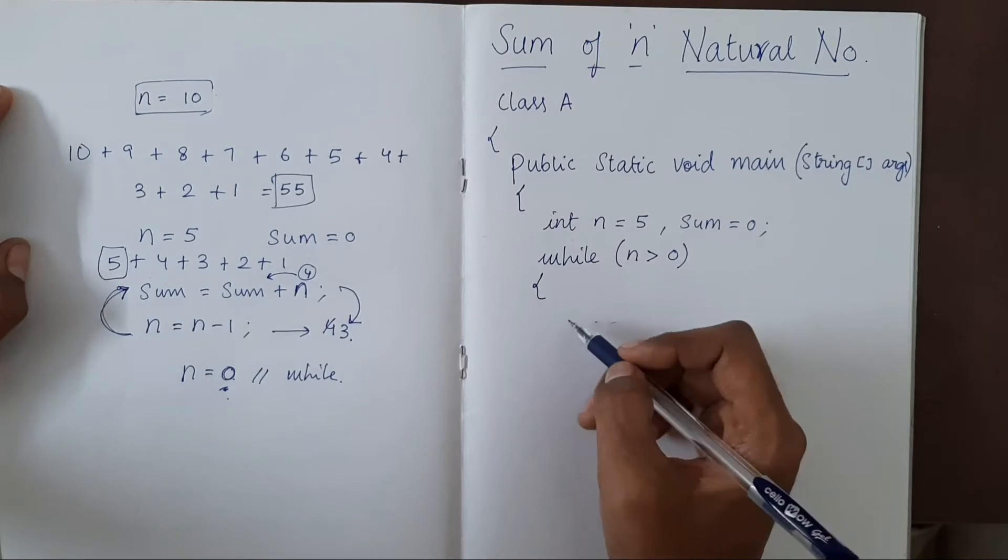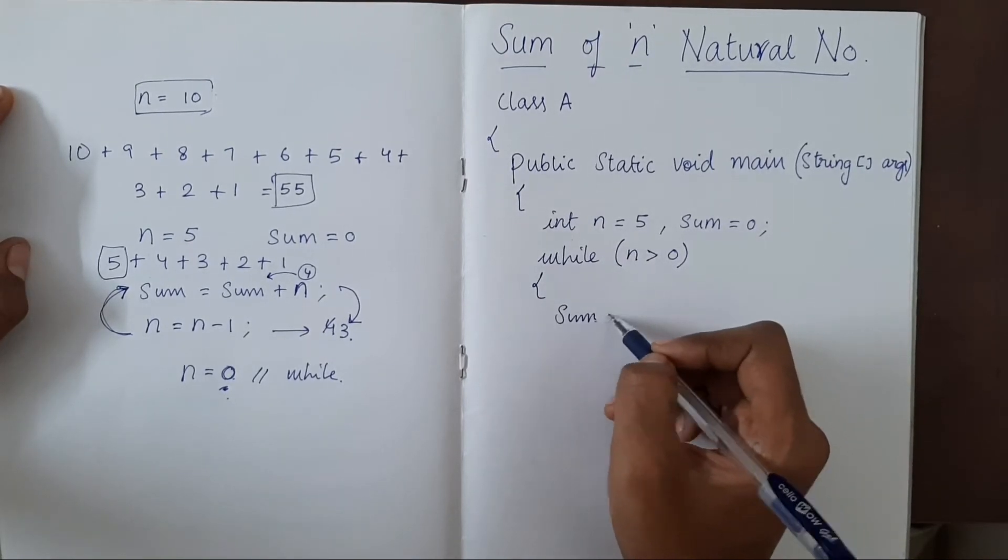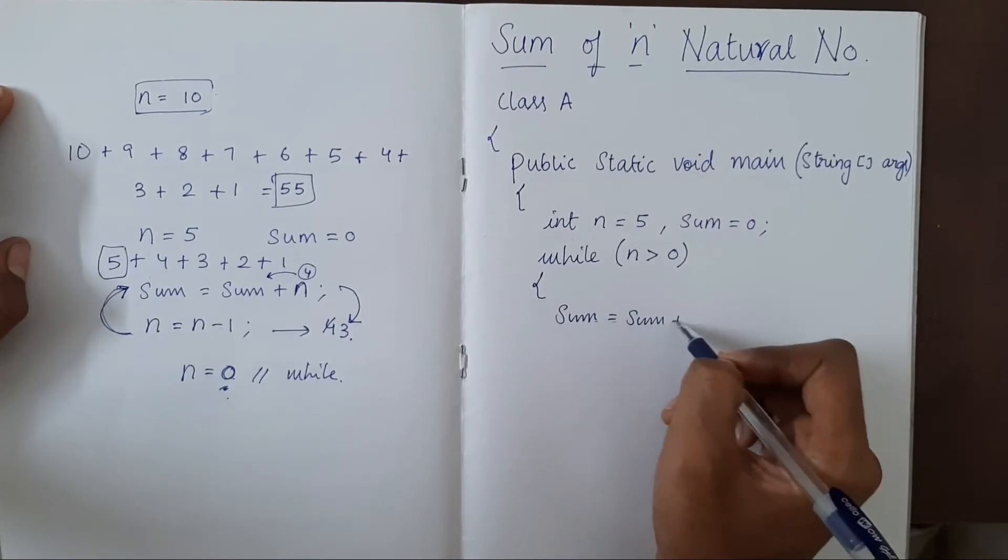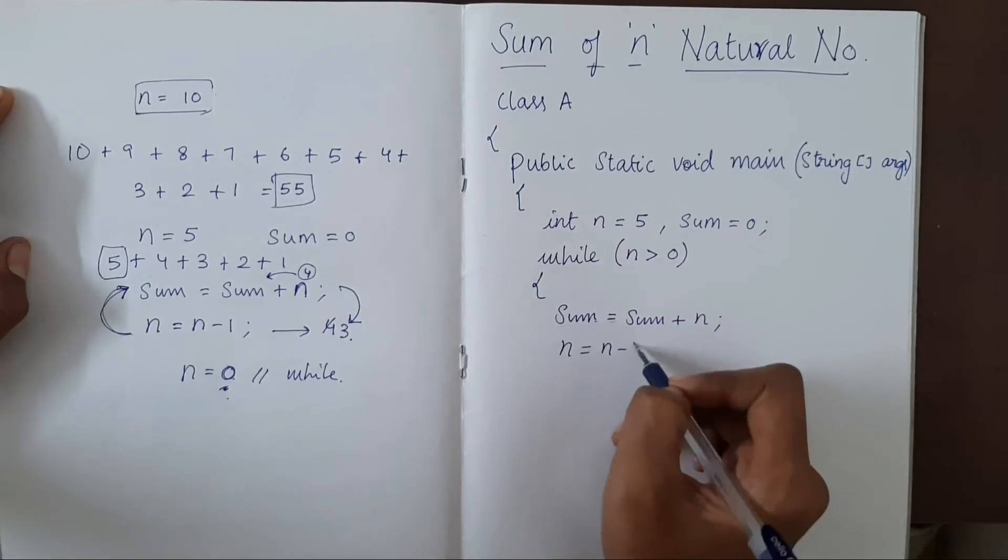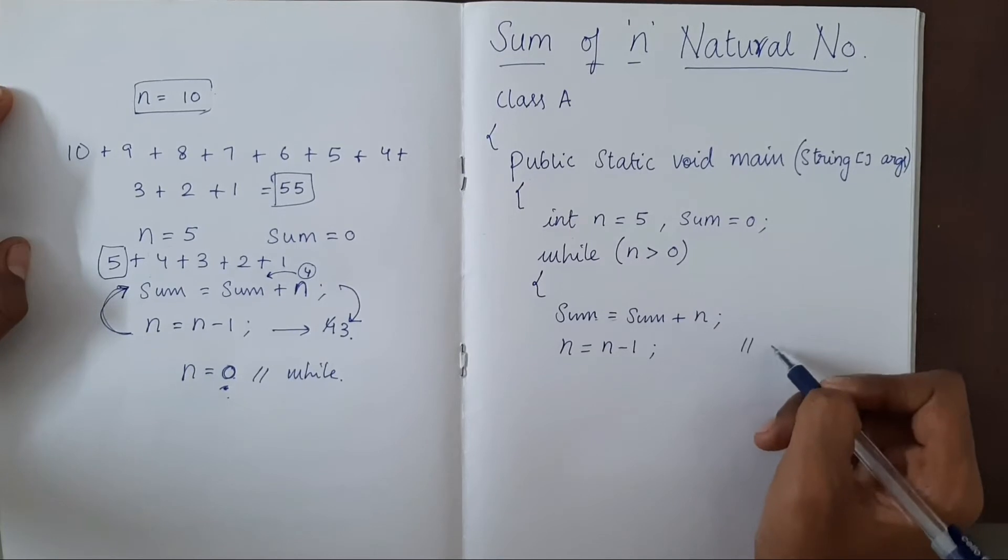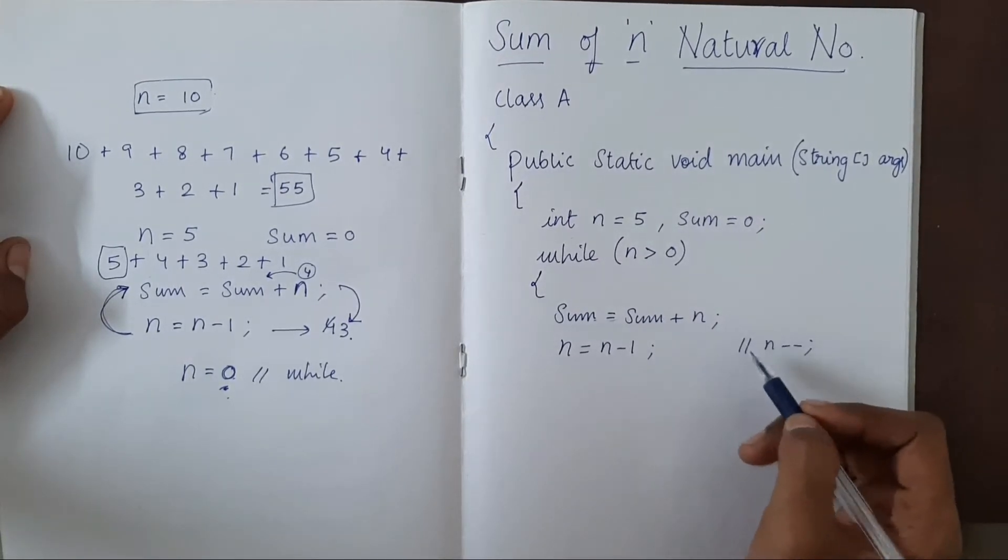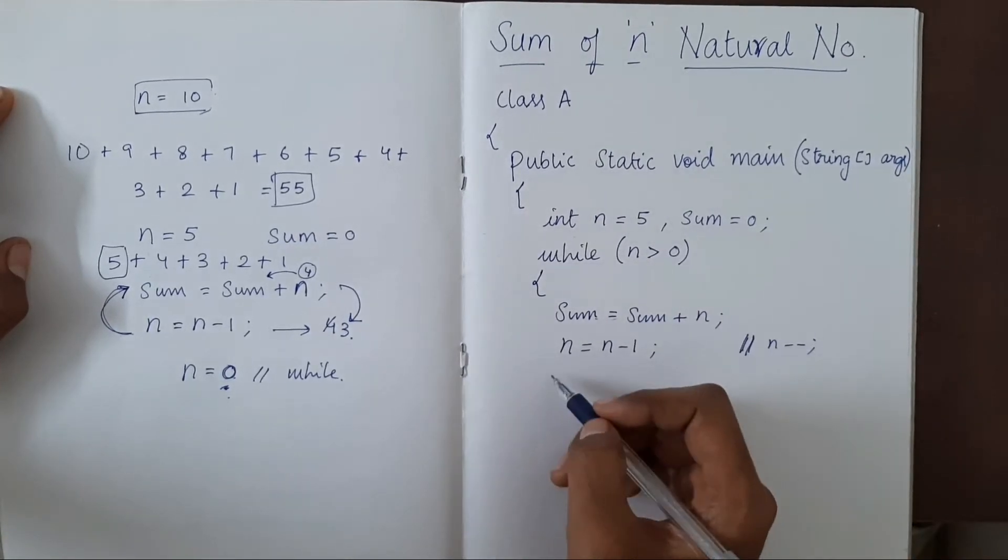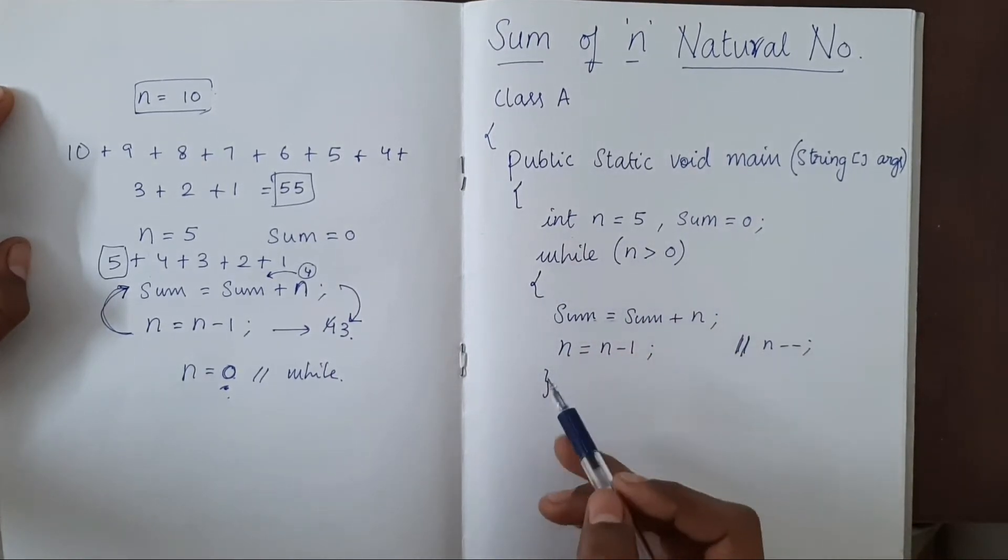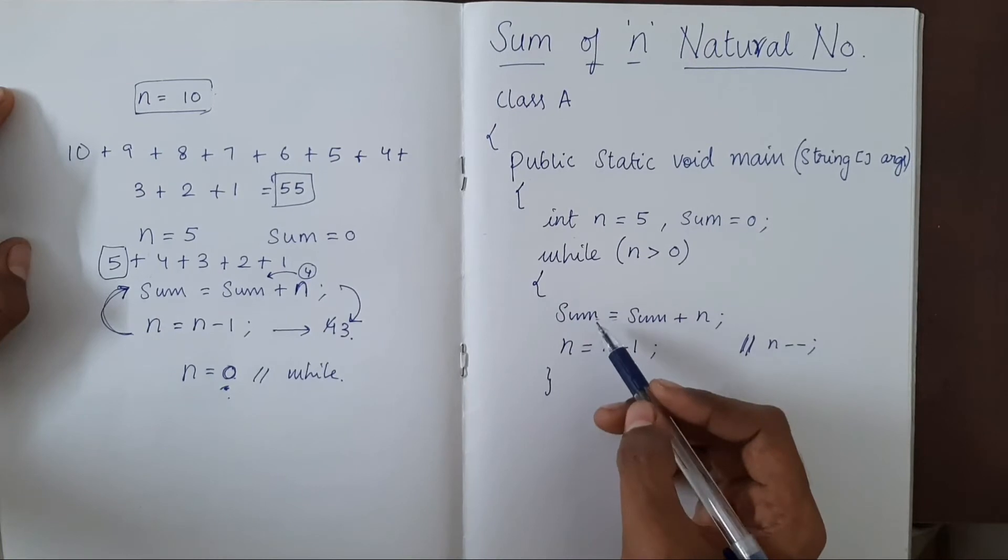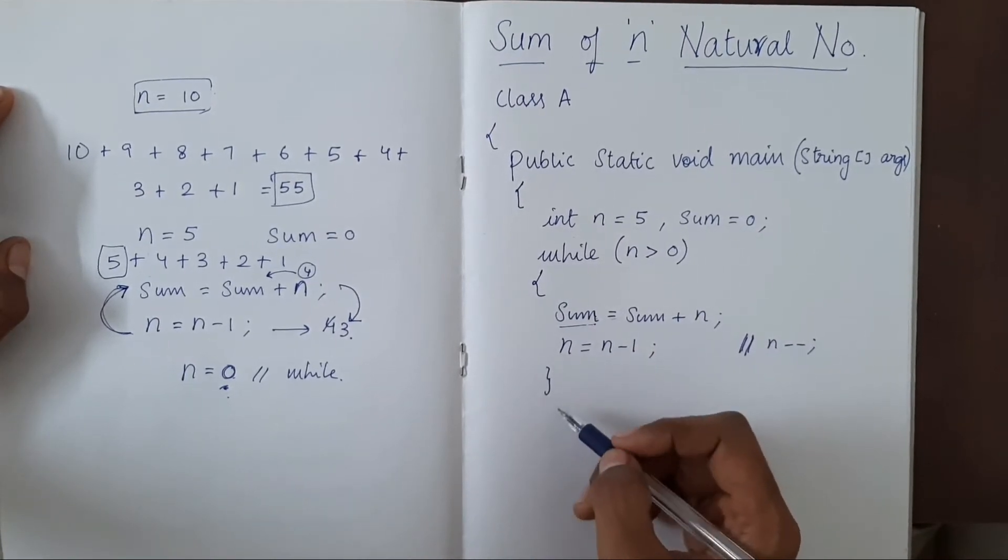we will do sum equal to sum plus n. n equal to n minus 1, or you can also put n minus minus. Both are the same thing. And then we finish the loop. So after this entire loop is completed, we will be having the variable sum with the final value which we want. So we will print that.